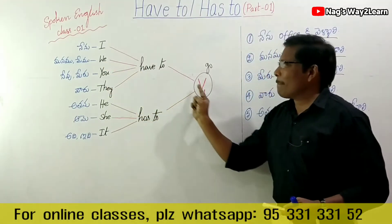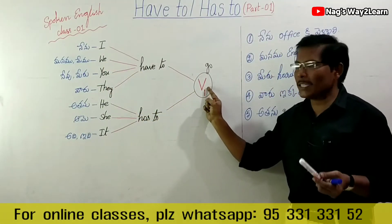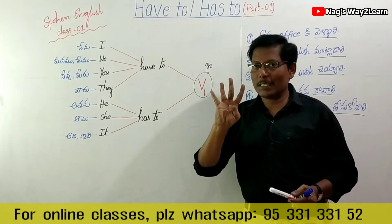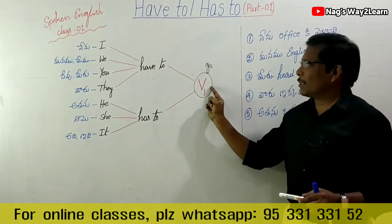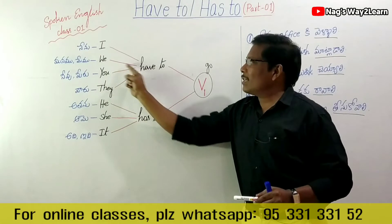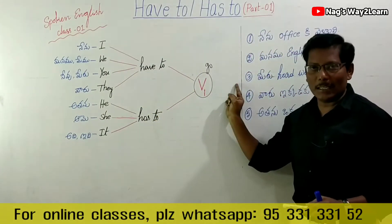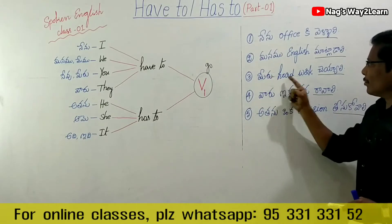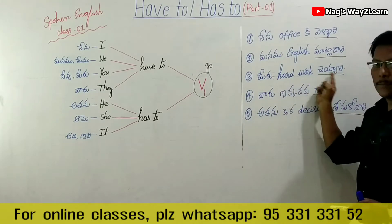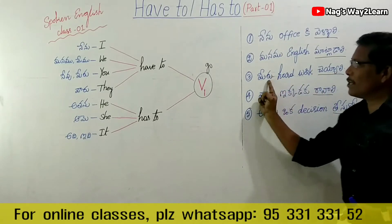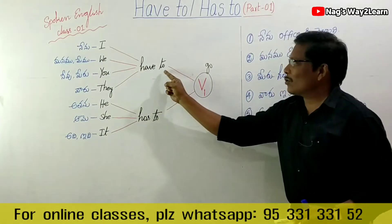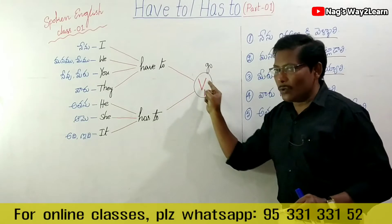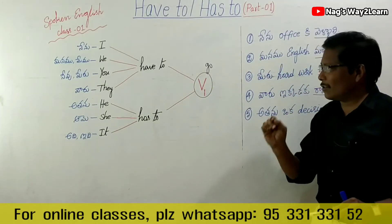We have to speak English. 'Speak' is the first form — speak, spoke, spoken, speaking. We have to speak English. Next: you have to do hard work.